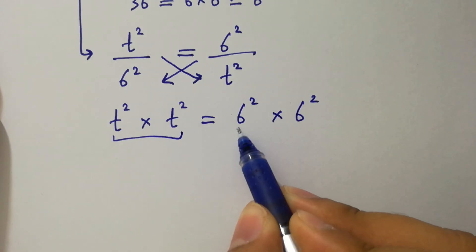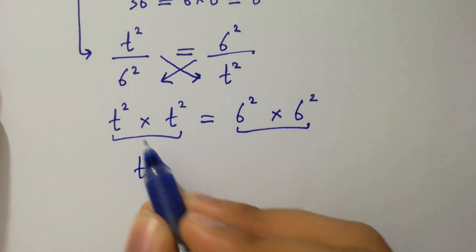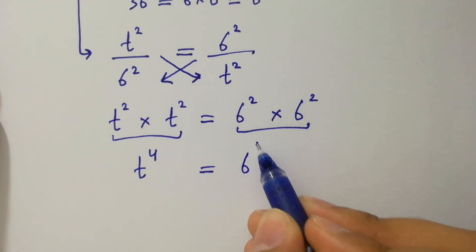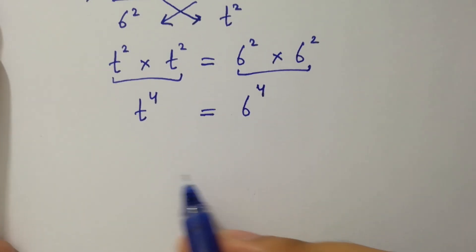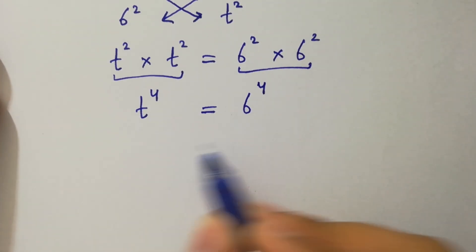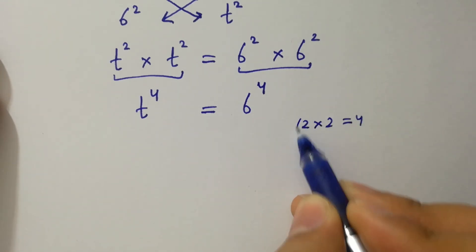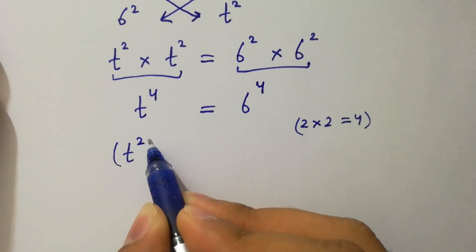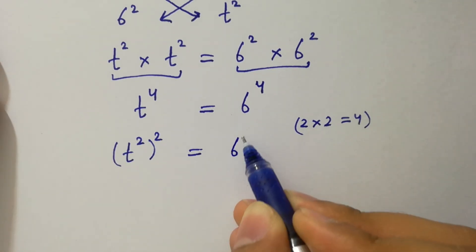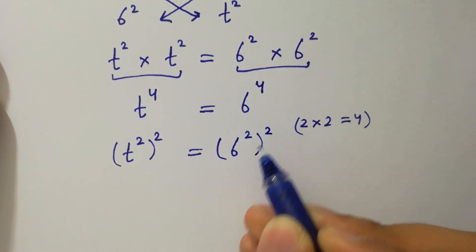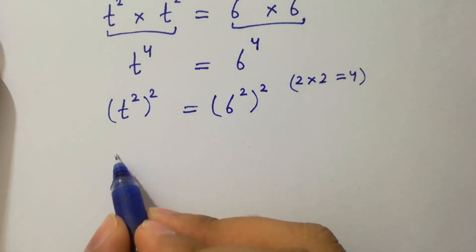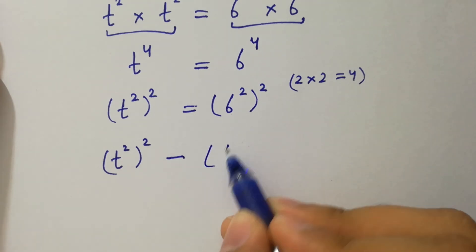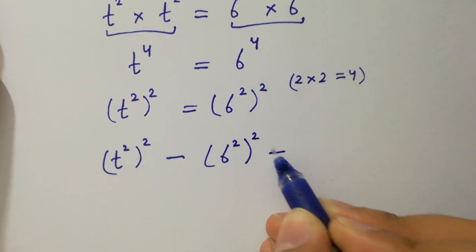Since the base is the same, we add the powers: t to the power 2 plus 2, which is 4, equals 6 to the power 4. As 2 times 2 is 4, we can write this as (t²)² equals (6²)². This can be rewritten as (t²)² minus (6²)² equals 0.